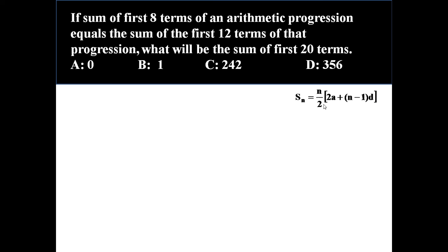The summation formula is Sn = (n/2) × (2a + (n−1)d). This is the universal formula to find the sum of an arithmetic progression. It is given that the sum of the first eight terms S8 equals the sum of the first twelve terms S12.